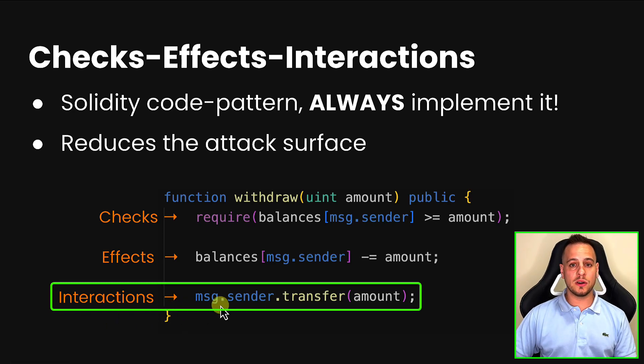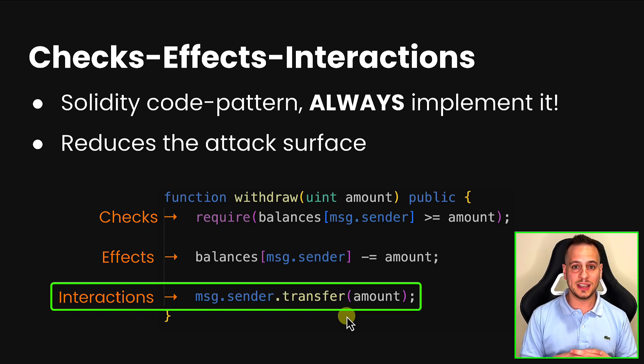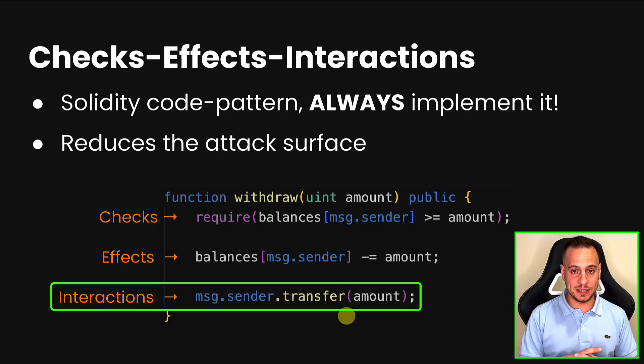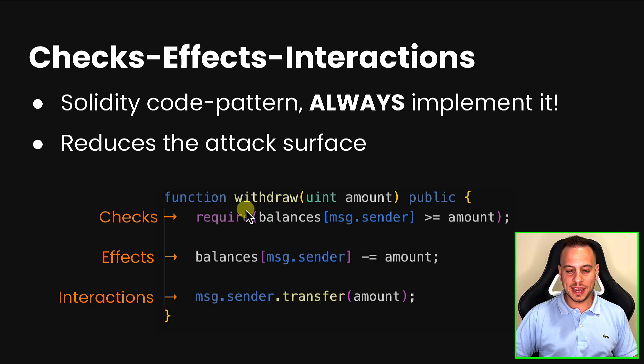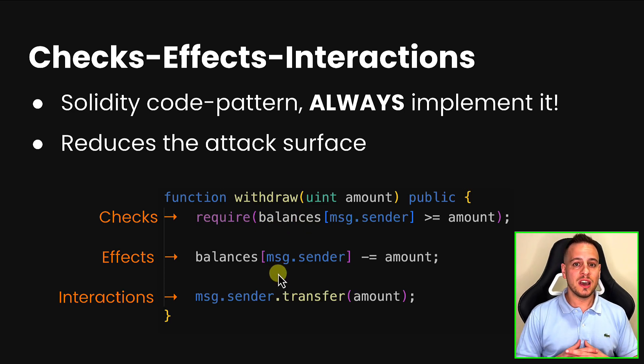This order is very important because during the interactions, the msg.sender — if it's a smart contract — can call the function again and attempt a re-entrancy attack. But if we always follow the order of checks, then effects, then interactions, the re-entry won't succeed. The attacker can call the function again, but it won't matter because the state was already updated and all checks have been performed.